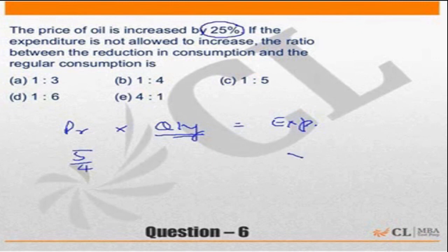Expenditure is not allowed to increase, so there is no change in expenditure. So quantity should become 4 by 5 times. Your consumption should become 4 by 5 times. This is what I explained a couple of questions ago, that if the expenditure is constant and whatever happens with price, the reciprocal of that will happen in quantity.